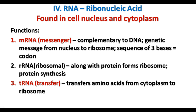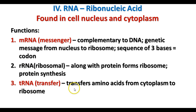There are several kinds of RNA. The three main kinds are named based on their functions. They are messenger RNA, ribosomal RNA, and transfer RNA. We usually refer to each one by an abbreviation: messenger RNA is mRNA, ribosomal is rRNA, and transfer is tRNA.